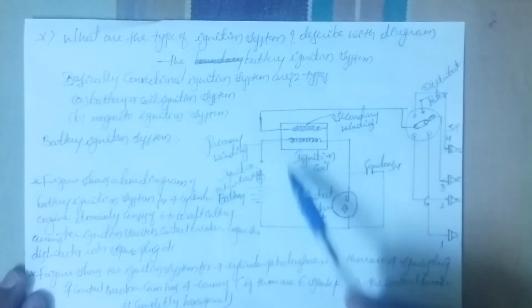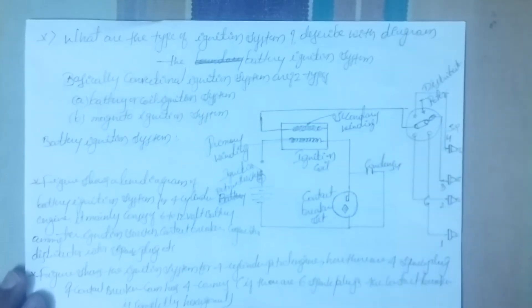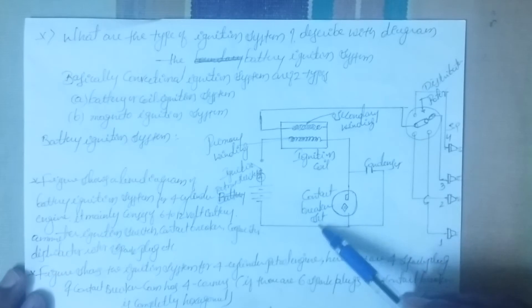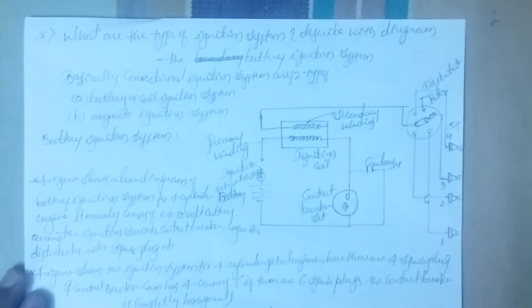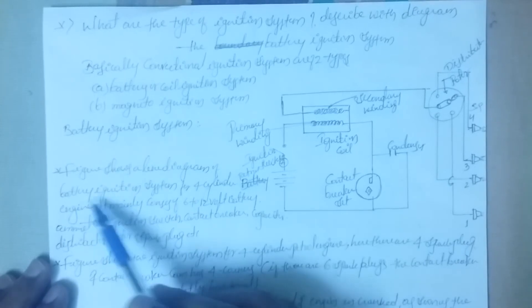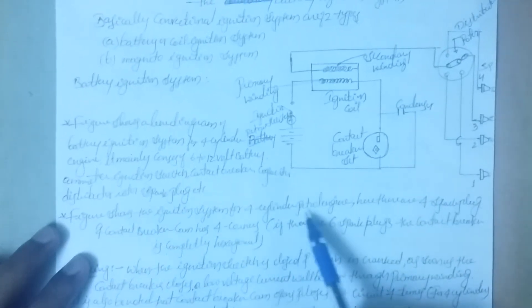Here I have shown the figure. The components are: battery, ammeter, ignition switch, primary winding, secondary winding, ignition coil, condenser, contact breaker, distributor rotor, and spark plugs. The figure shows a line diagram of battery ignition system for a four cylinder petrol engine. It mainly consists of a 6 to 12 volt battery, ammeter, ignition switch, contact breaker, capacitor, distributor rotor, and spark plugs.